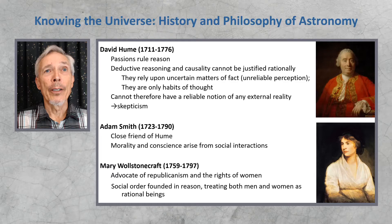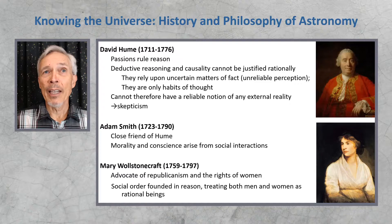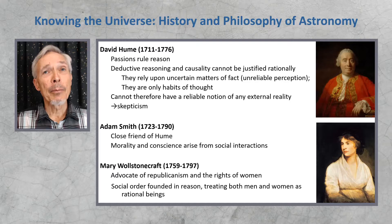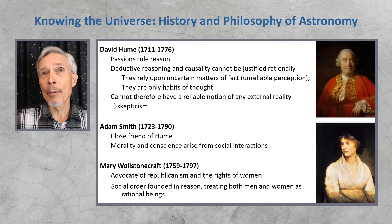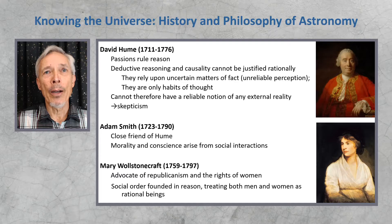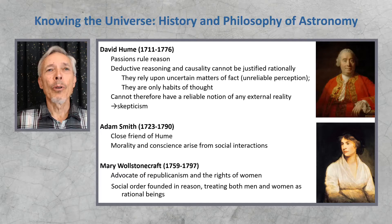David Hume was a remarkable figure known to have spoken five or six languages before the age of five, including ancient Greek. He argued that passions rule reason and we must suppress them to be rational. He thought that deductive reasoning and causality could not actually be justified rationally, since they rely on uncertain matters of fact and unreliable perception — only habits of thought. He agreed that we cannot have a reliable notion of external reality, adhering to skepticism, which is at the heart of all science.